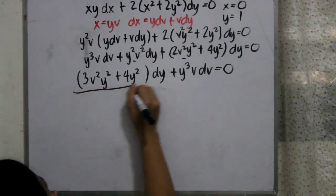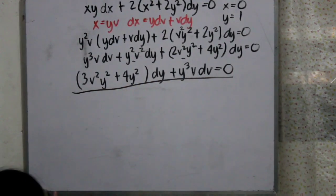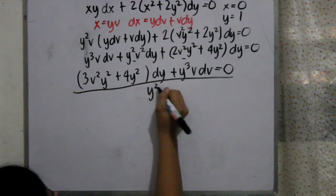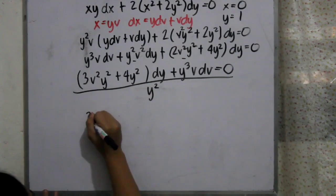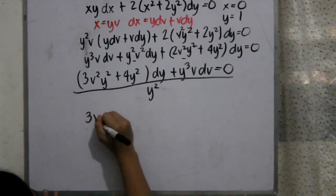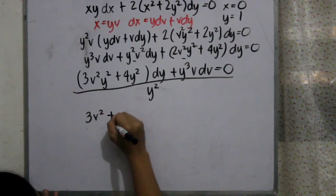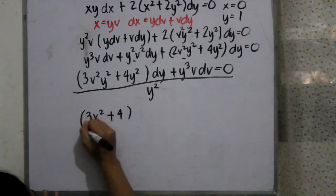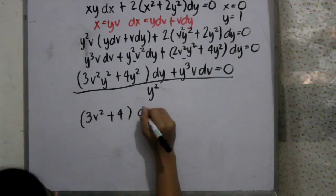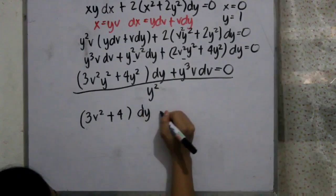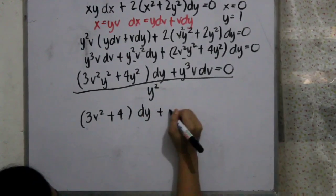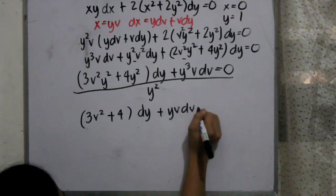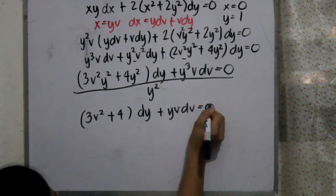So we have to divide everything by y². We will then have 3v² plus 4, multiplied by dy, plus y·v·dv, equals 0.